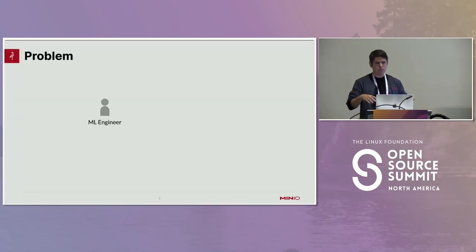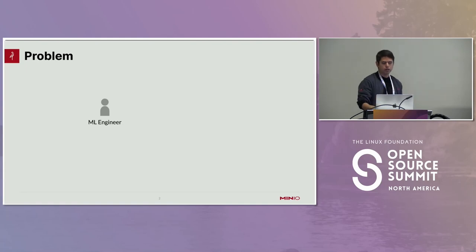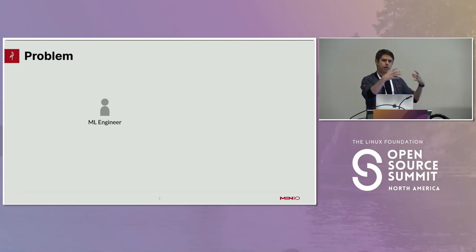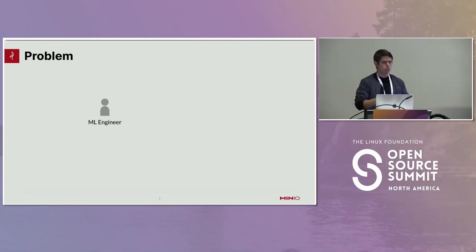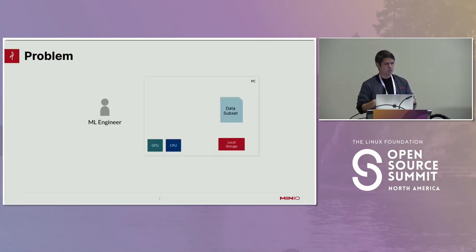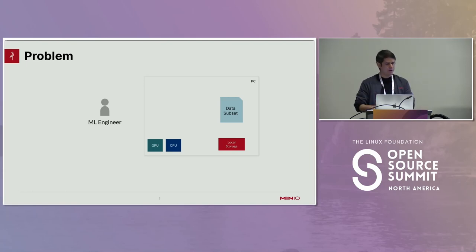I'm going to start with the premise of the problem I'm trying to address. Nowadays, machine learning is becoming a very relevant area and it's been growing, building on top of the history that big data has been bringing to the table. What's happening right now is you have machine learning engineers working on their pipelines, and traditionally they're working on their own personal computer, which may have some CPUs and GPUs. There's a dataset laying around on that machine and they're so used to having it in their local storage.